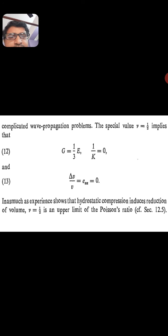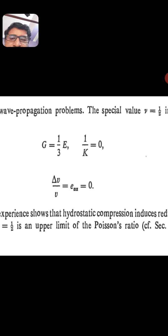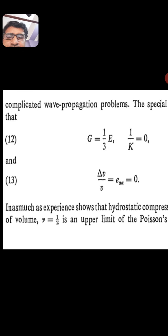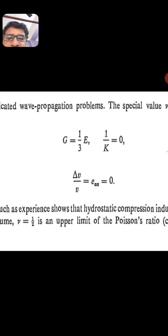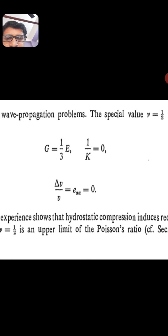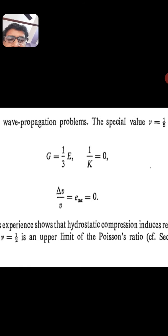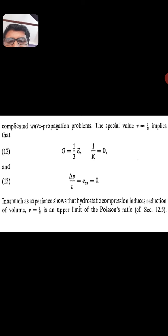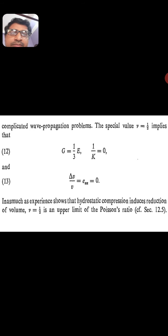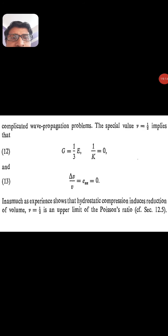For complicated wave propagation problems, when ν = 1/2, that implies G = E/3, 1/K = 0, and δV/V = ε_αα = 0. Experience shows that hydrostatic compression induces reduction of volume, so ν = 1/2 is an upper limit of the Poisson's ratio.